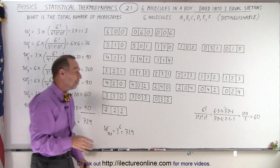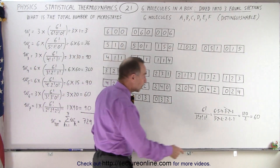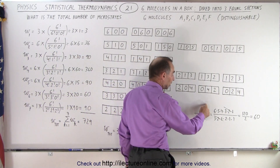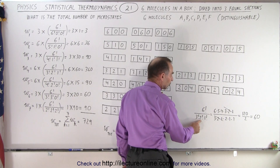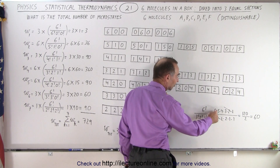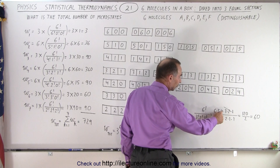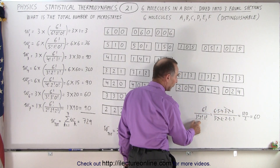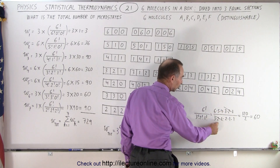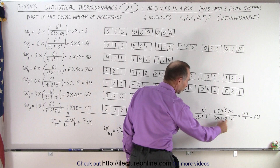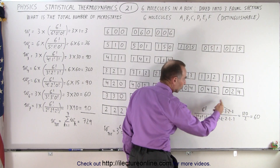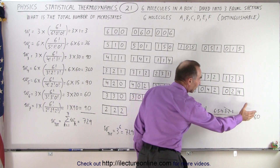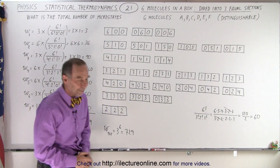Just so that you remember, when you have something like six factorial divided by three factorial, divided by two factorial, divided by one factorial, that's the same as six times five times four times three times two times one, divided by three times two times one, divided by two times one, divided by one. When you simplify all that, you do end up with 60.